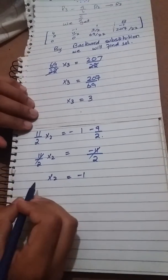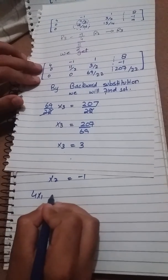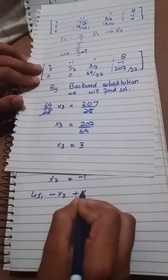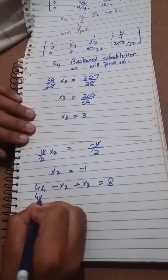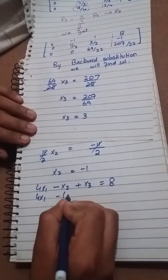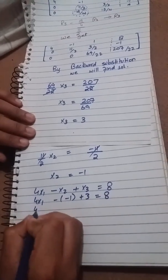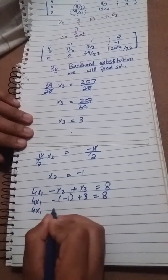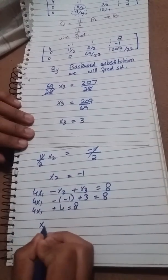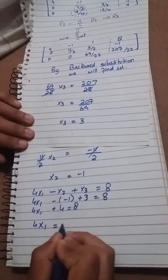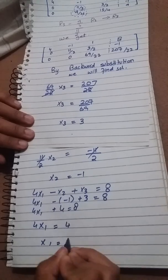Now we will find X1. 4X1 minus X2 plus X3 is equal to 8. 4X1 minus (-1) plus 3 is equal to 8. 4X1 plus 4 is equal to 8. 4X1 is equal to 4 and X1 is equal to 1.